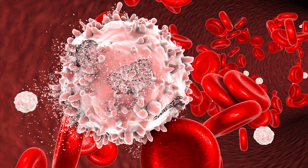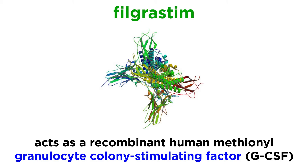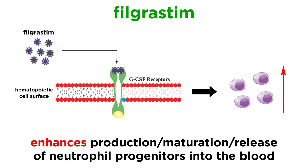Specific drugs in this class usually mediate their immunostimulatory effect by influencing the enhancement of a specific type of white blood cell. To give a brief example, filgrastim is a recombinant human methionyl granulocyte colony stimulating factor. It acts to enhance functionality of neutrophil progenitors via enhancement of production, maturation, and release into the blood.